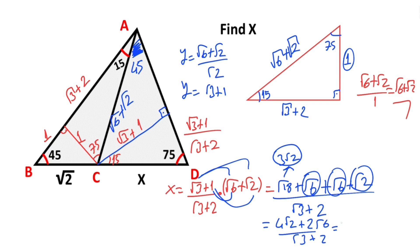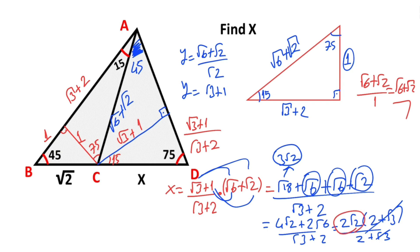Putting into parentheses: 2 root 2 times (root 3 plus 2) over (2 plus root 3). These cancel, meaning x equals 2 root 2. That means x equals root 2. Okay, this is the first method.